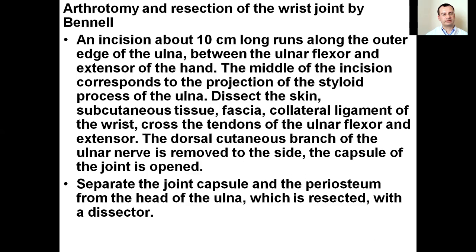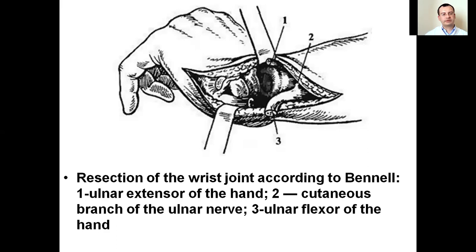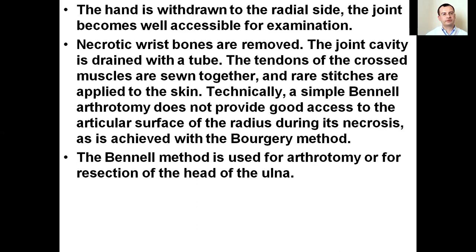The joint capsule and periosteum are separated from the head of the ulna, which is resected with a dissector. In Benel resection of the wrist joint, the hand is withdrawn to the radial side, making the joint accessible for examination; necrotic wrist bones are removed and the joint cavity is drained with a tube. Tendons of the crossed muscles are sewn together and rare stitches are applied to the skin. The Benel arthrotomy does not provide good access to the articular surface of the radius during its necrosis — as is achieved with the Borger method — and is primarily used for arthrotomy or resection of the head of the ulna.